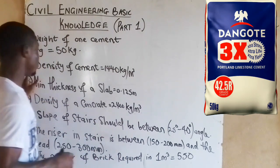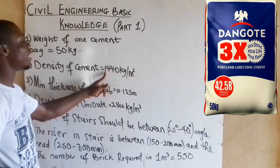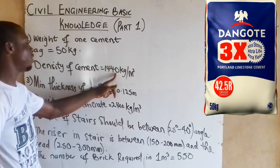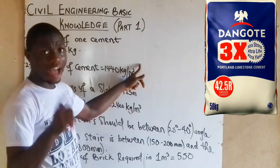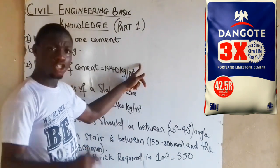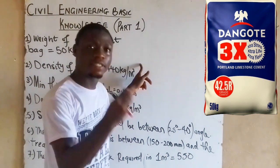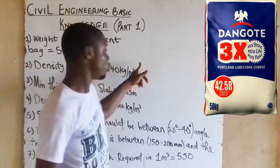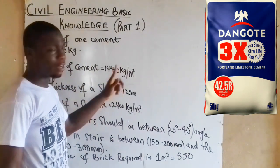Number two, density of cement is equal to 1440 kg per meter cube. As an engineering student, you need to know the density of a bag of cement, which is 1440 kg per meter cube.